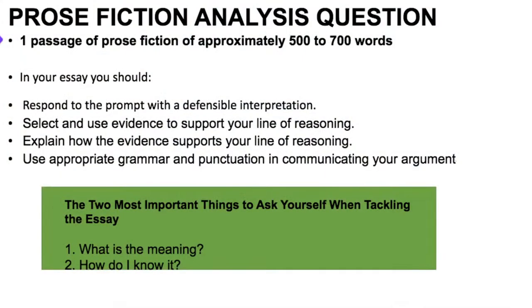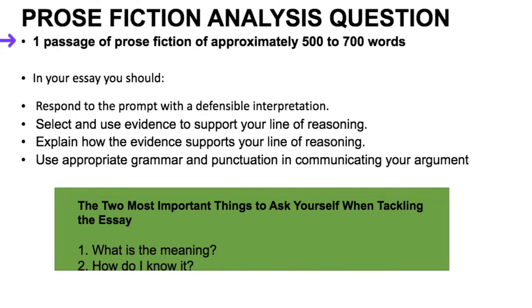Now we're going to talk about the prose fiction analysis essay. Here you'll be given a fairly long work of prose fiction — approximately 500 to 700 words — which means it's going to take a while to read. Your job is to respond similarly to how you respond to the poem: answer the question they ask and provide lots of evidence to prove your answer. That means you always need a thesis — what the College Board calls a defensible interpretation — plus evidence to support it, a bare minimum of three to five pieces, and explanations of how the evidence supports your reasoning. Watch your writing style: sound grammar, punctuation, and good vocabulary.